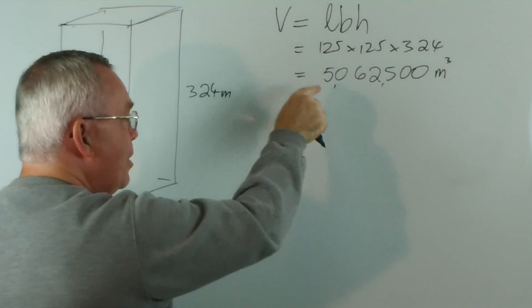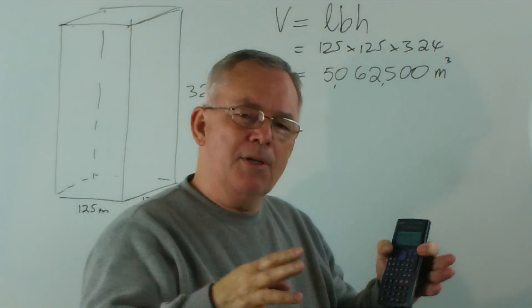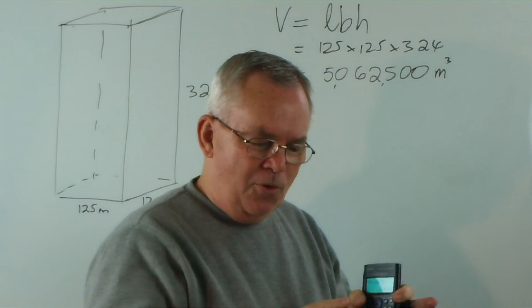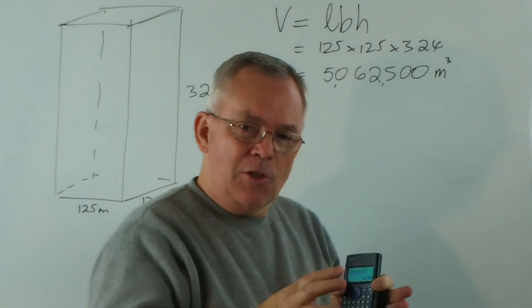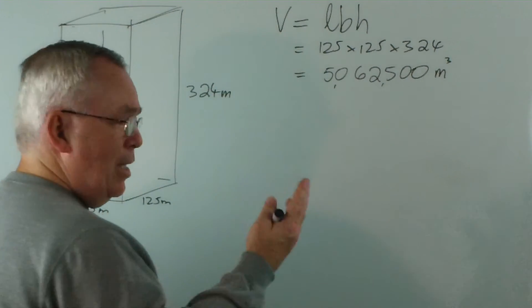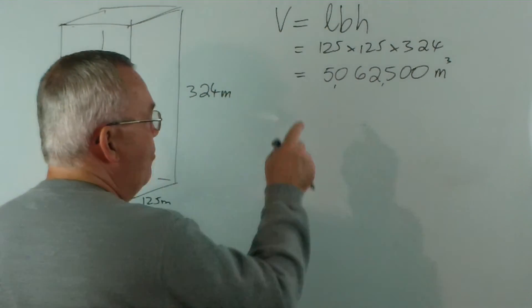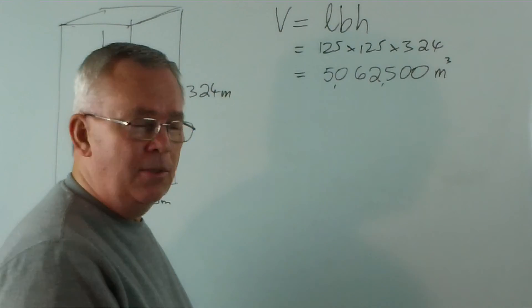But here it is. How much does this weigh? Well, the problem is that as you heat the air, it expands, and as you cool it, it contracts. So its density — how much you pack into a cubic metre — changes with temperature. But at about 20 degrees, which is a comfortable day, every cubic metre of air weighs about 1.2 kilograms.